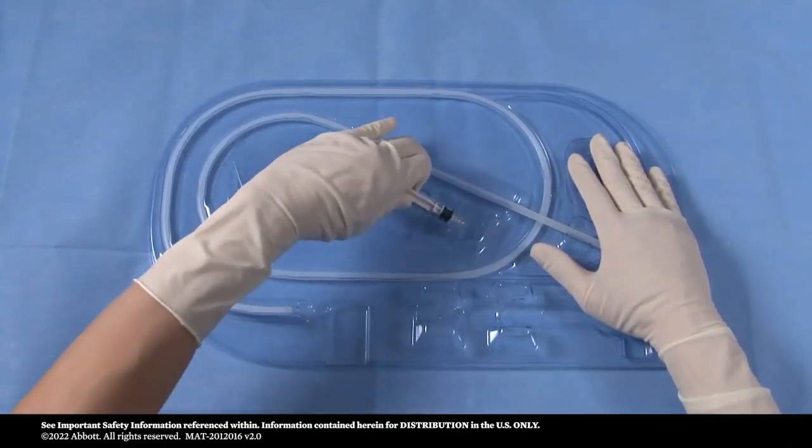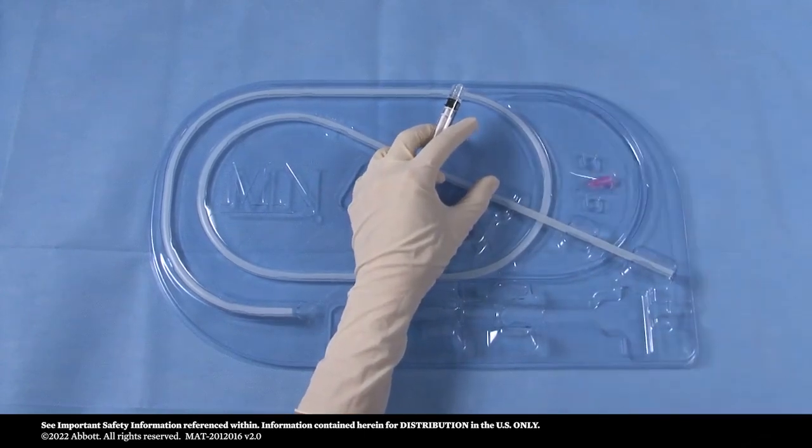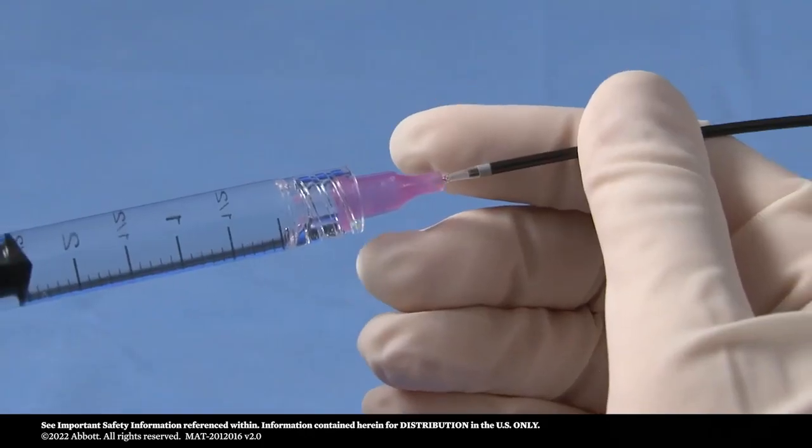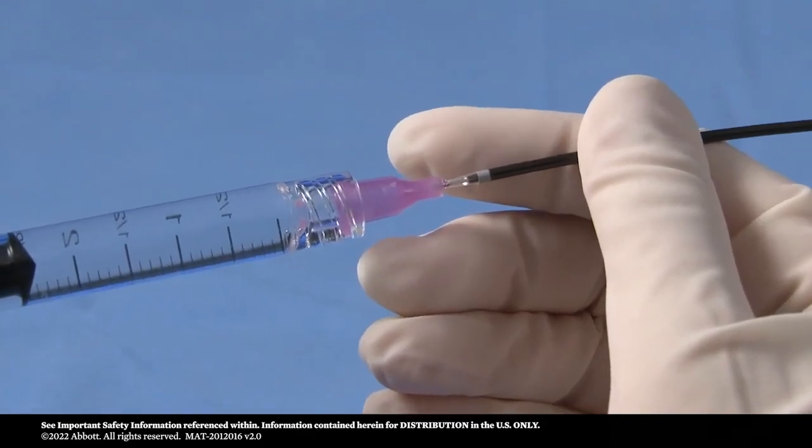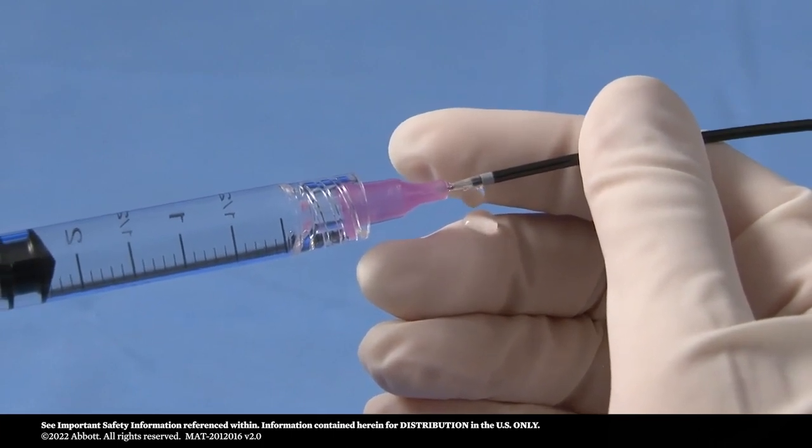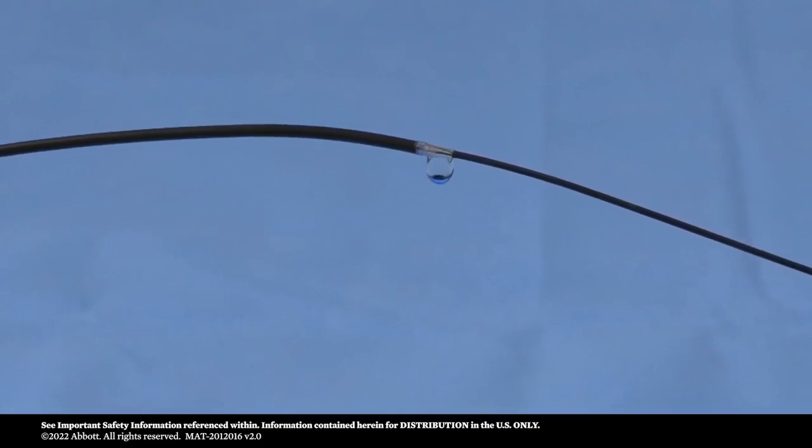Next, fill the 3 milliliter syringe with saline and attach the syringe to the flushing tip. Insert the end of the flushing tip in the distal end of the device and flush. Note that saline will exit at the catheter tip and at the guide wire exit port. This demonstrates the flushing procedure is complete.